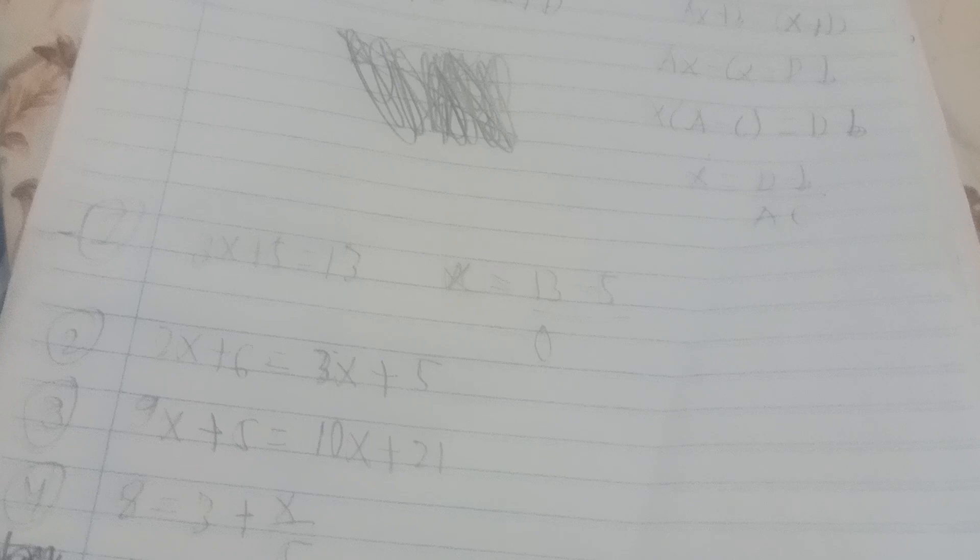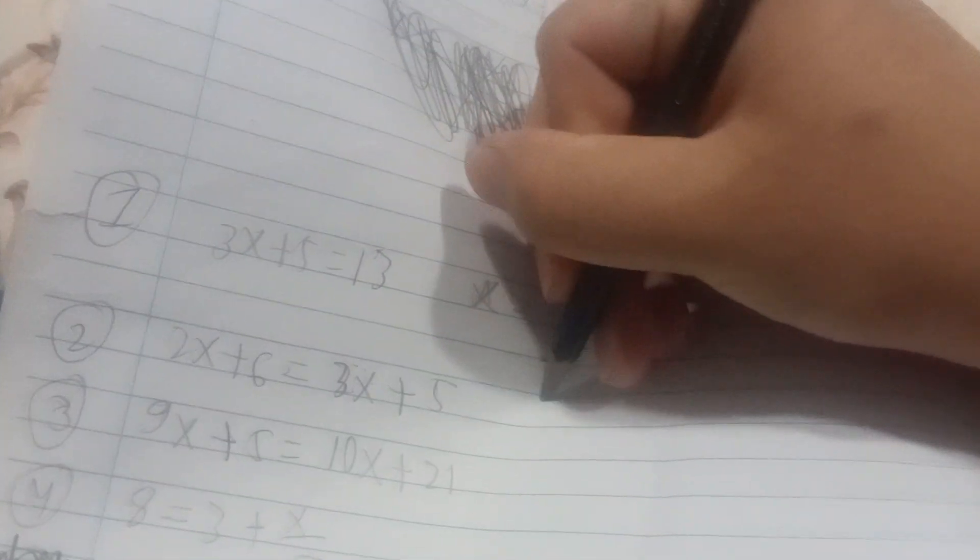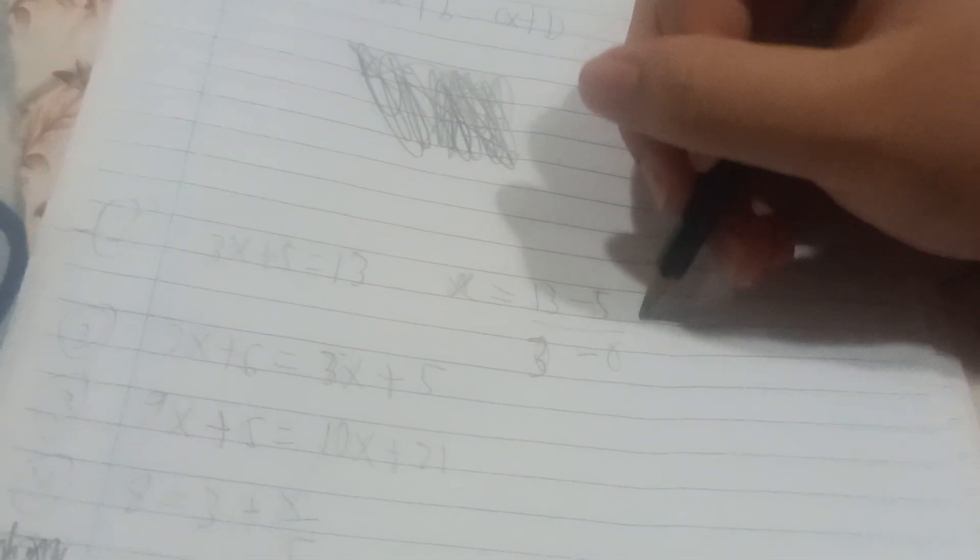5 all over 0. Wait, it's A minus C, not C. Sorry, 3 minus 0. So the answer will be 8 over 3. That's your X. Let's take a look at number two and number three.